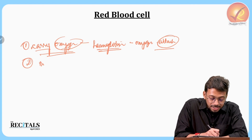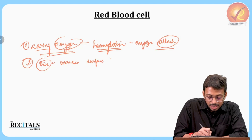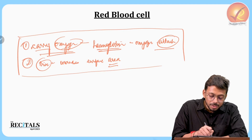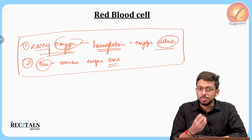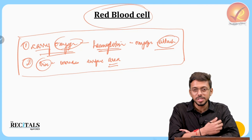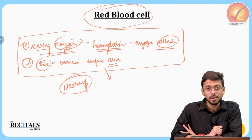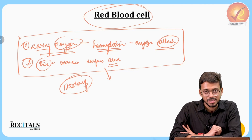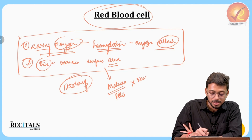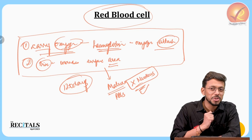Red blood cells are shaped like a disc, which increases their surface area. They are part of the blood, just like white blood cells, but their role is carrying oxygen rather than immunity. They have a lifespan of approximately 120 days. An important fact to remember is that mature red blood cells do not have a nucleus.